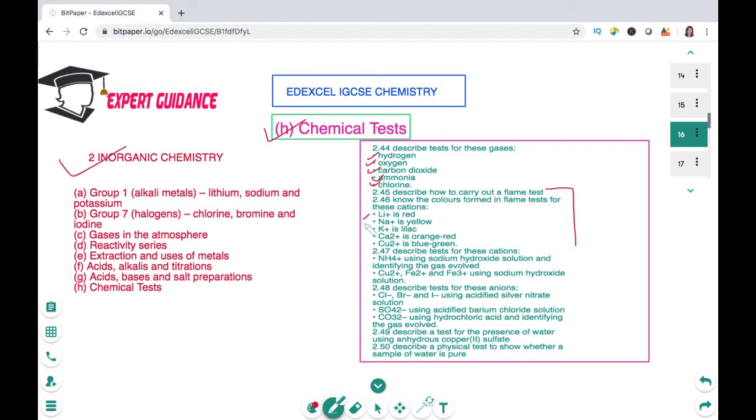We'll look at how to carry out a flame test and what are the colors for lithium, sodium, potassium, calcium and copper ions. Next we'll be looking at the tests for some other cations like NH4+, Cu2+, Fe2+ and Fe3+.